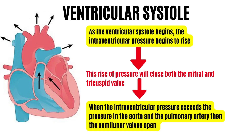With blood now in the left and right ventricles, the ventricles must contract to push blood into the pulmonary artery and aorta. Ventricular systole lasts about 0.3 seconds, and it begins immediately as atrial systole ends. As ventricular systole begins, intraventricular pressure rises, closing both the mitral and tricuspid valves so blood cannot backflow into the atria. The intraventricular pressure continues to increase, but ejection does not yet occur since the semilunar valves are still closed. This period lasts about 0.05 seconds.